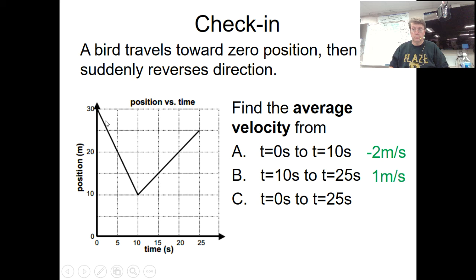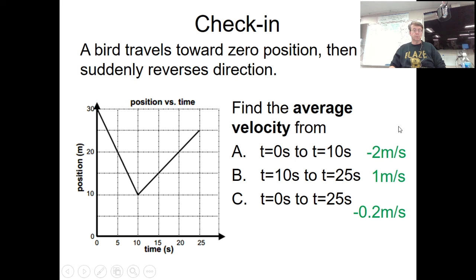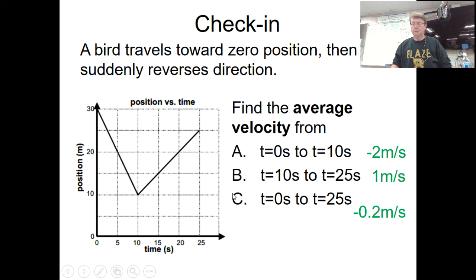For the average velocity from zero all the way to the end of the trip, we use the total displacement of negative 5 meters divided by the total time of 25 seconds. Negative 5 divided by 25 is negative 0.2 meters per second. Notice that the average velocity for the entire trip is not the same as the numerical average of the two segment velocities — a numerical average would give negative 0.5, which is wrong.